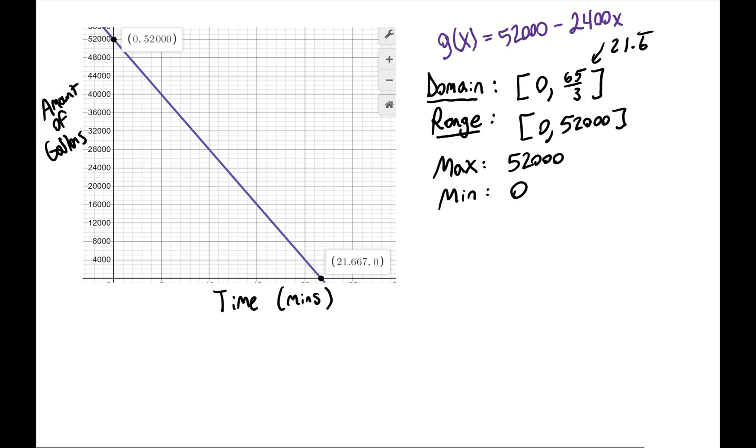The rate of change, in this case it's slope because it's a linear function, was negative 2,400, and the units on that is gallons per minute. The y-intercept was (0, 52000) representing the amount of gallons we started with, and the x-intercept was (21.6 repeating, 0) representing how long it took to drain the pool.